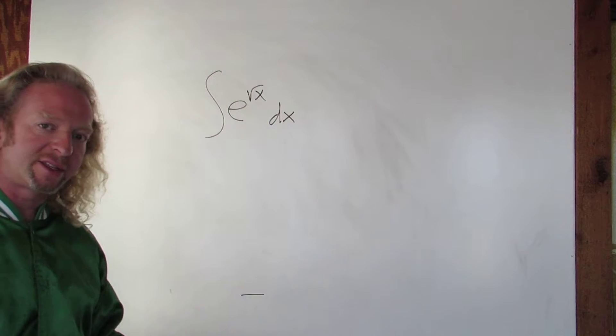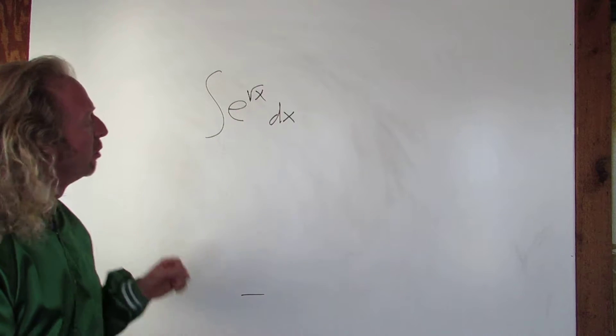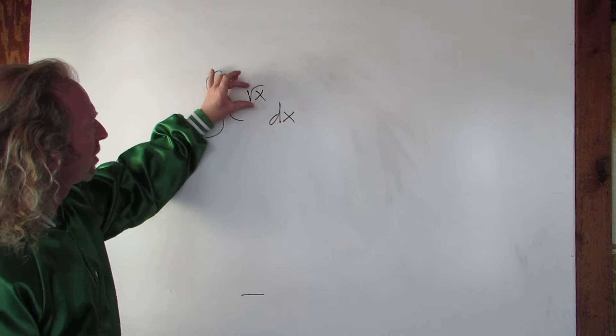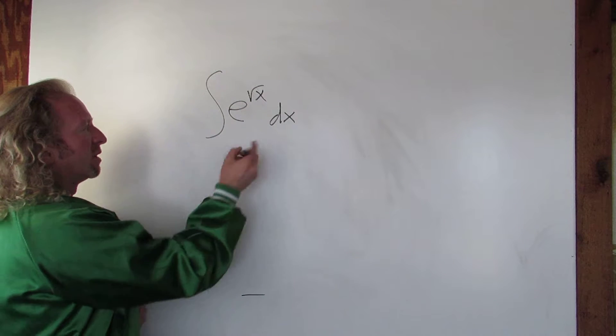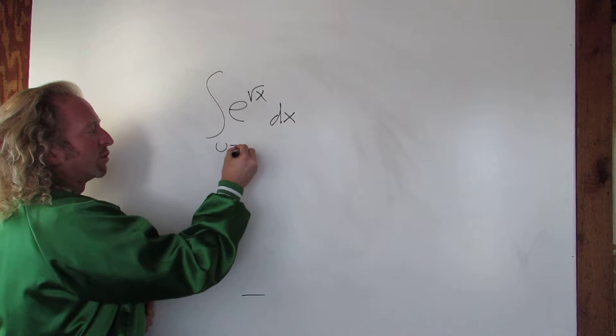So if you had an integral like this and you didn't know how to do it, what you would probably do is start by calling this u and then just seeing what happens. So let's try that. We'll call this piece u, so u is equal to square root of x.